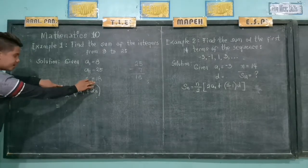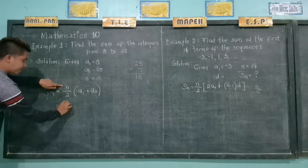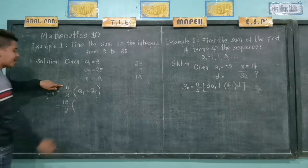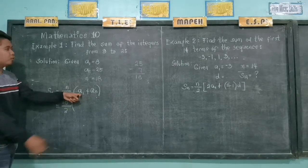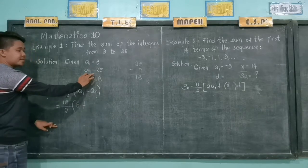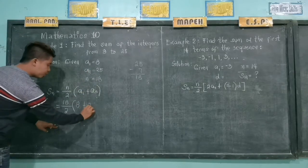So we have our n, 18 over 2, times the quantity a sub 1, we have 8, plus a sub n, the last term is 25.